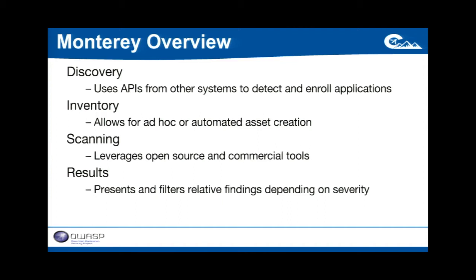A basic Monterey overview can be broken down into four parts. The first is discovery. When you think about developers changing things — different security groups or permissions being changed at all times — discovery gives us a way to search and develop what the context of our environment is. We want to be able to dynamically go out and look at how many ELBs we have open, how many instances are open to the internet through their security groups. Discovery allows us to do that dynamically and use sources of information from our other security tools to give additional context and allow Monterey to take actions when needed.